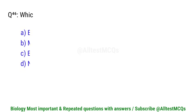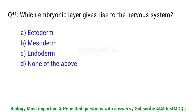Question number 46. Which embryonic layer gives rise to the nervous system? Correct option is A. Ectoderm.